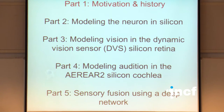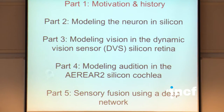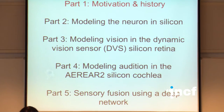The talk is composed of five parts. First, motivation and history. Second, modeling the neuron in silicon — I'll explain the technology we use to construct electronic circuits that imitate the neuron. Third, the dynamic vision sensor retina I have here in front of me. Fourth, audition in the silicon cochlea — I have another board here for demos. And fifth, if we get to it, how we're moving ahead looking at different network types for sensor fusion, including deep networks, which are a hot topic in machine learning.